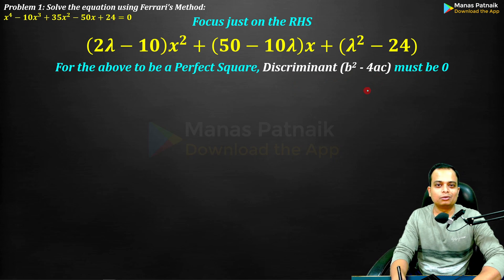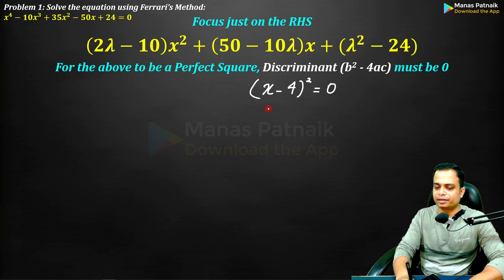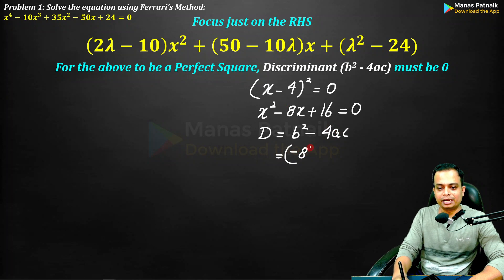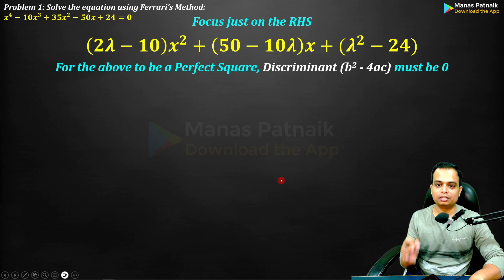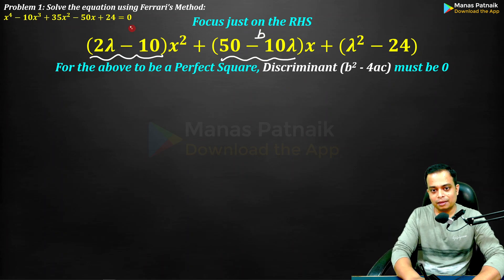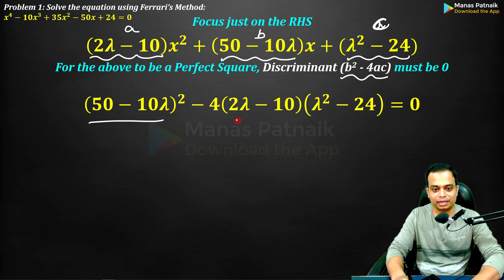For the RHS to be a perfect square, the discriminant b² − 4AC must equal 0. To verify: consider (x − 4)² = x² − 8x + 16 = 0; its discriminant is (−8)² − 4·1·16 = 64 − 64 = 0. Whenever you deal with perfect squares, the discriminant is 0. We use the same principle to find lambda: identify A, B, and C in the RHS quadratic in x, then set b² − 4AC = 0.